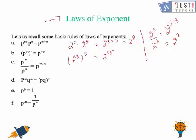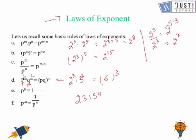The next is p to the power m times q to the power m — here the exponents are the same and bases are different. So 2 to the power 3 times 3 to the power 3 equals p times q, which is 2 times 3, that is 6, to the whole power 3. The next is p to the power 0 — any constant or variable raised to the power 0, such as 2, 3, 1, 5, or 9 raised to the power 0, the answer is always 1.